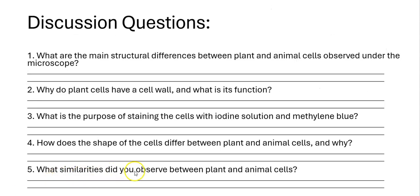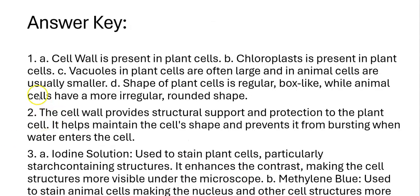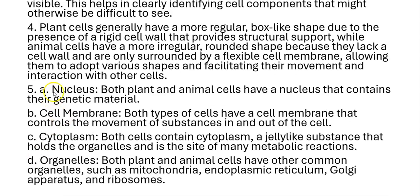Last question: what similarities did you observe between plant and animal cells? Both have a nucleus that contains their genetic material. Both have a cell membrane that controls the movement of substances in and out of the cell. Both contain cytoplasm, a gel-like substance holding the organelles and serving as the site of many metabolic reactions. Both also share common organelles such as mitochondria, endoplasmic reticulum, Golgi apparatus, and ribosomes.